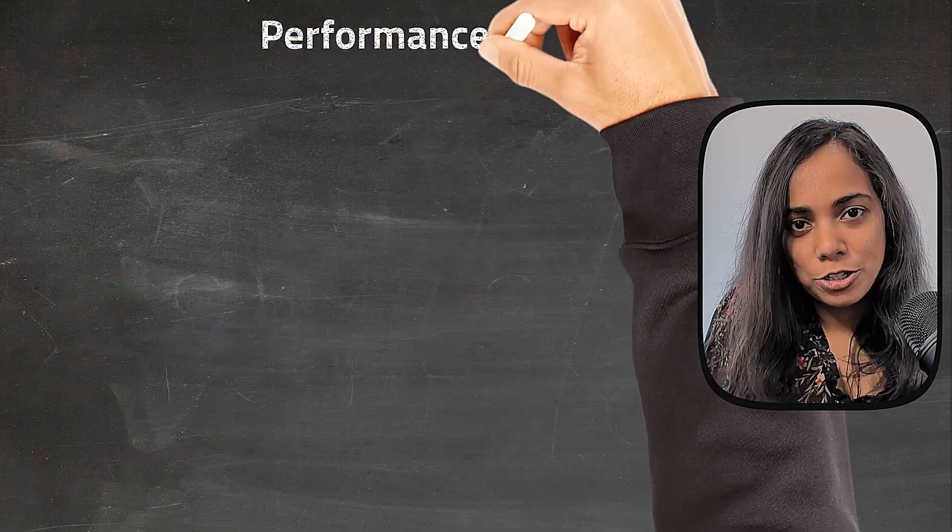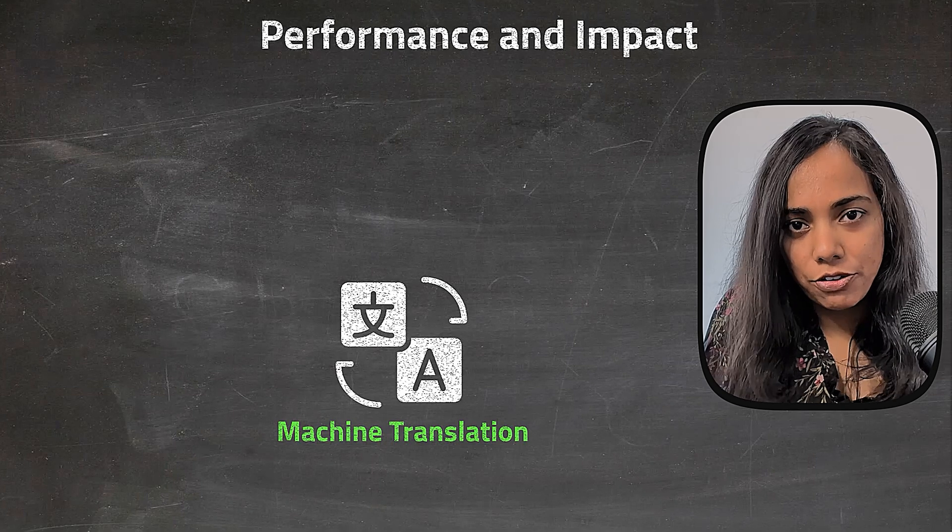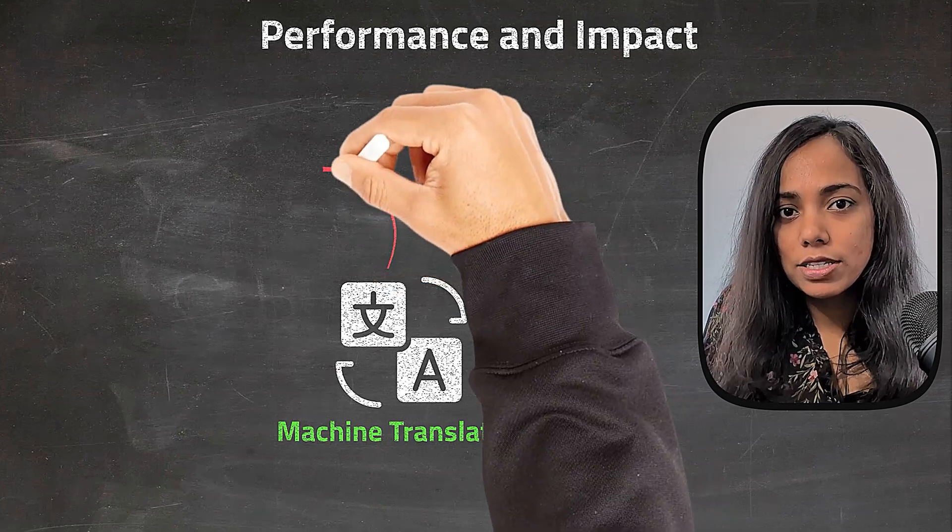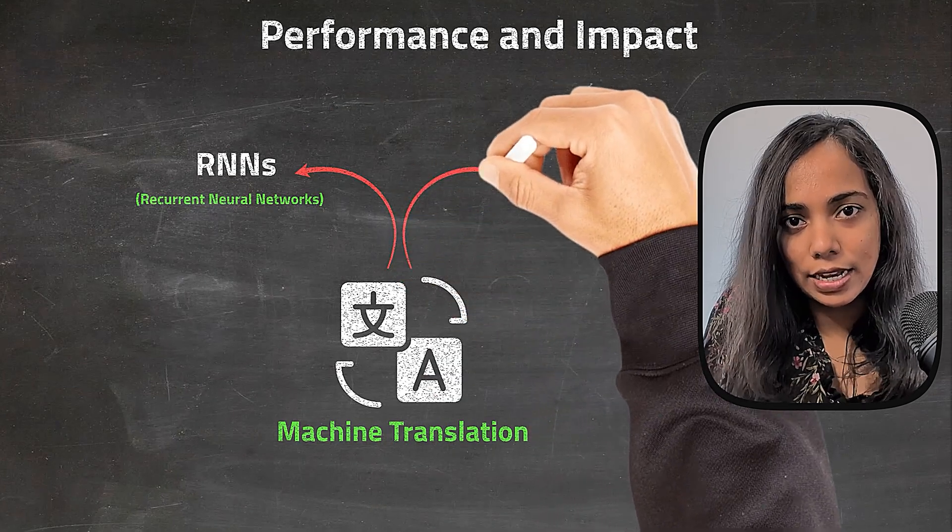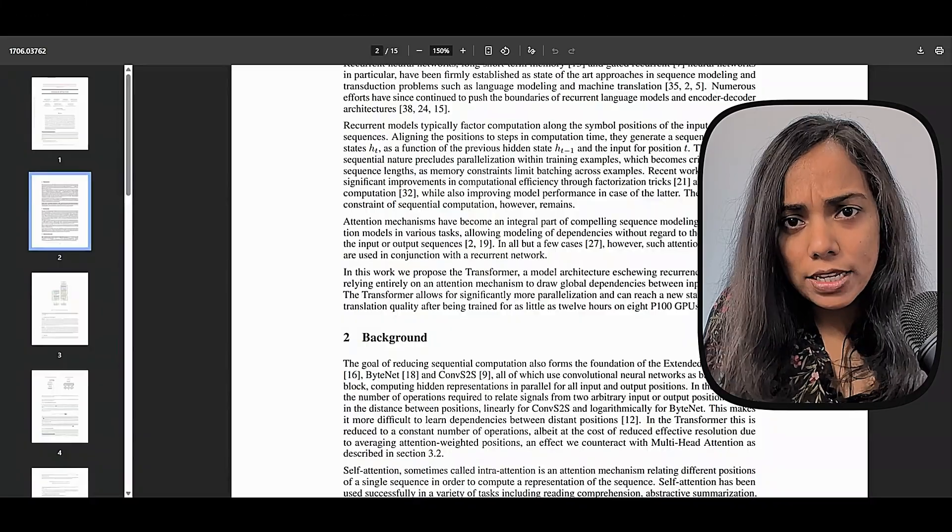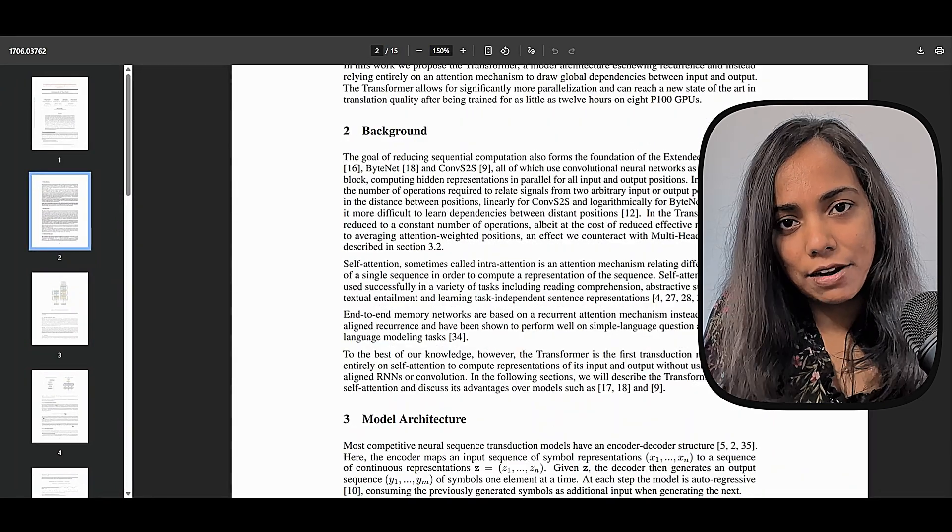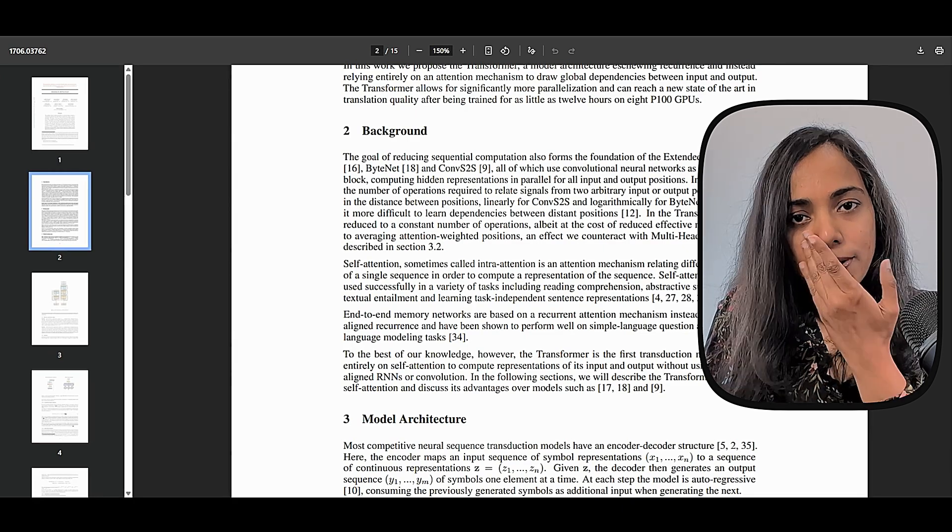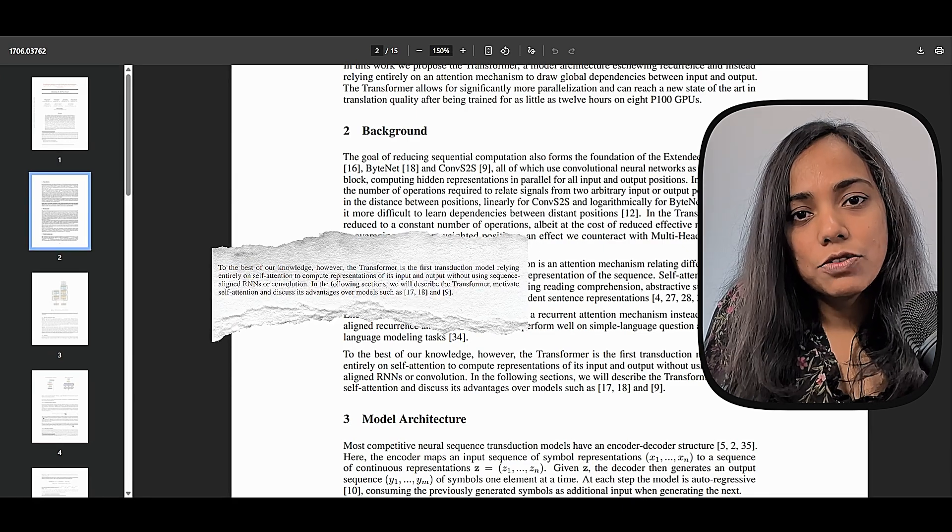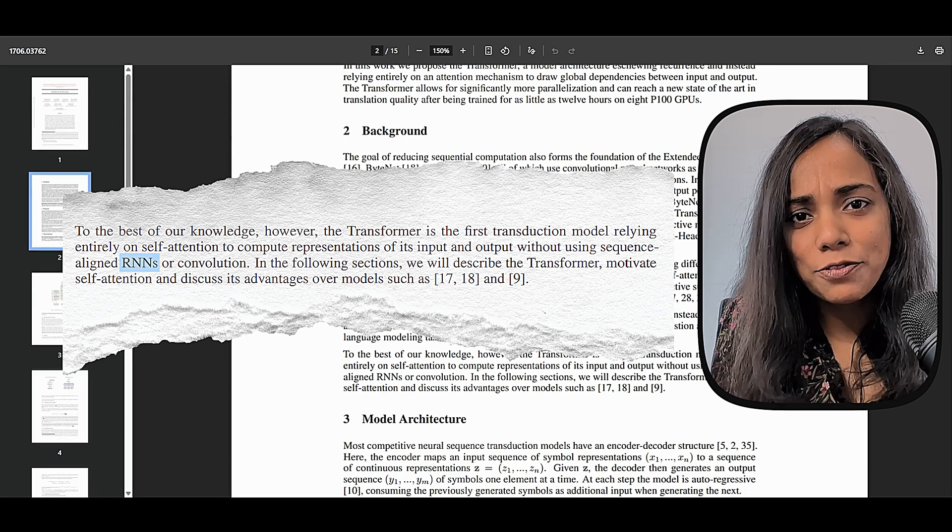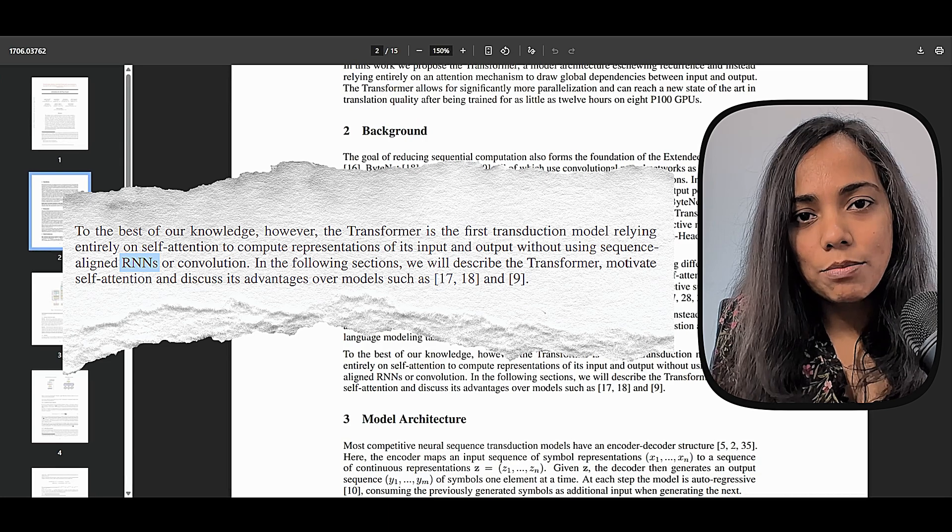Before transformers showed up, the main players for things like machine translation were algorithms based on recurrent neural networks, RNNs, and convolutional neural networks, CNNs. These were complex neural network structures that were doing okay for that time, but they had their limitations. Let's look at RNNs, which are designed for sequential information processing and text is of course sequential.